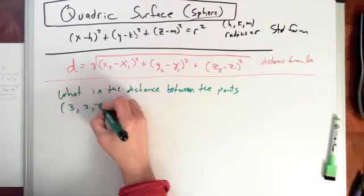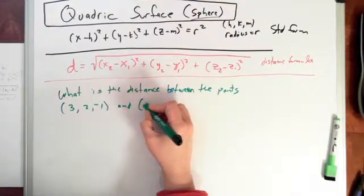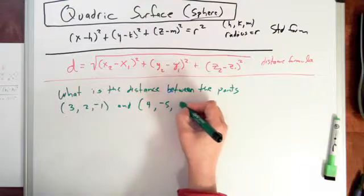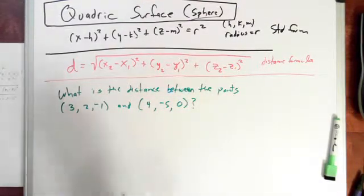What is the distance between the points (3, 2, -1) and (4, -5, 0)? Well, let's apply the distance formula.